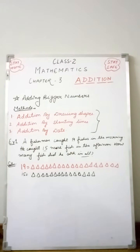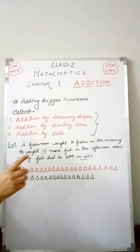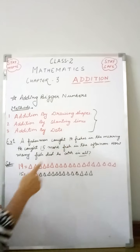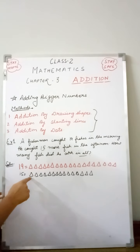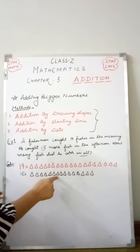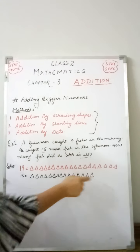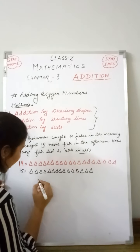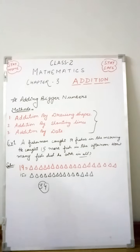Now we have to count all the total number of triangles. The first 19 are already counted. Starting from 19, we continue counting the next set: 20, 21, 22, 23, 24, 25, 26, 27, 28, 29, 30, 31, 32, 33, 34. So the total number of triangles is 34.